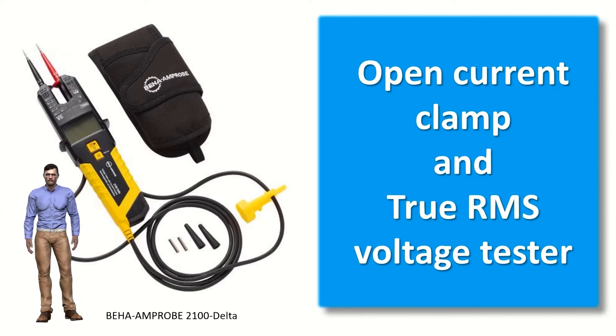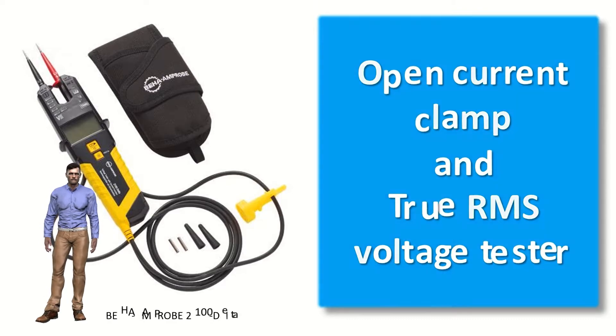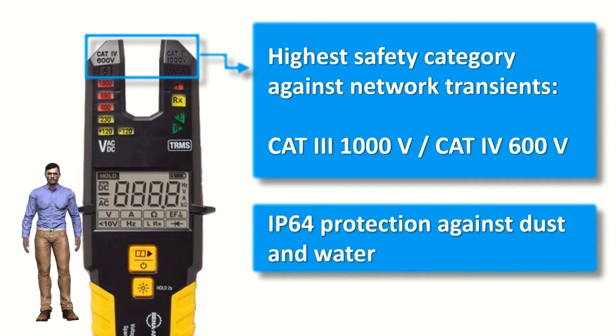The Amprobe 2100 Delta open clamp has a robust appearance, with a rubber grip to prevent slipping and suitable fasteners to increase safety when taking measurements. It has high IP64 protection against dust and splashes of water, which allows it to be used in difficult, dusty and humid environments.